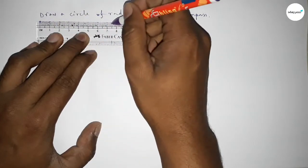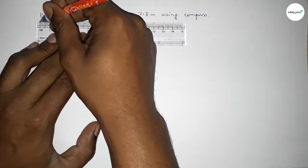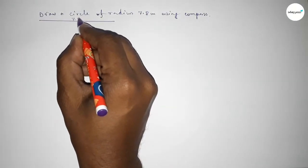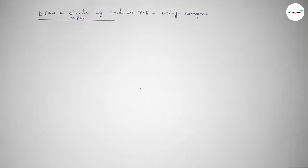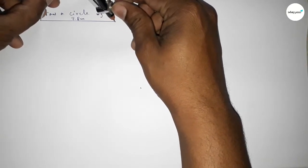So this is 1, 2, 3, 4, 5, 6, 7, 7.5, 6, 7, 8. So this is 7.8 centimeter. So first drawing here a line of length 7.8 centimeter. Now taking the length 7.8 centimeter by using compass by this way.